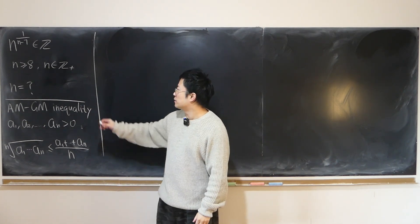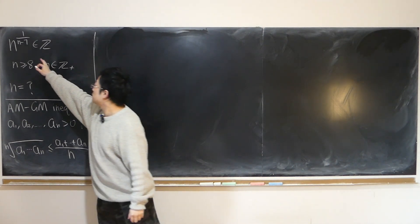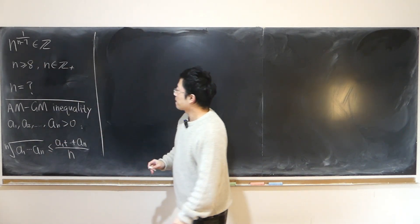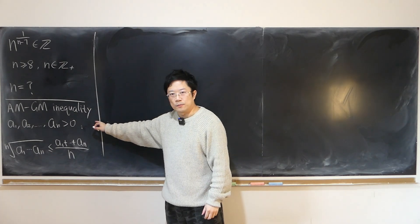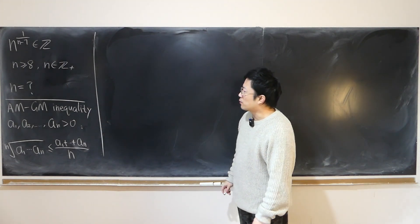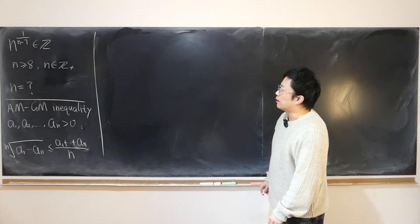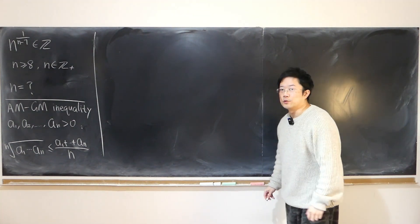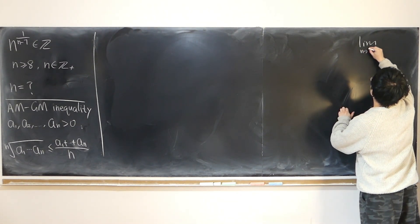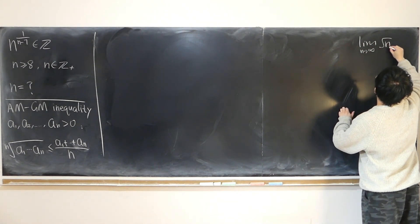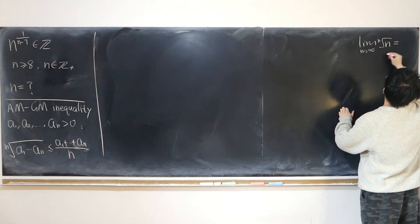What kind of positive integer n, greater than or equal to 8, makes this an integer? I'm going to use the AM-GM inequality to prove some inequality. The background of this Math Olympiad problem from Swedish 2002 is a result from calculus: the nth root of n has a limit of 1.